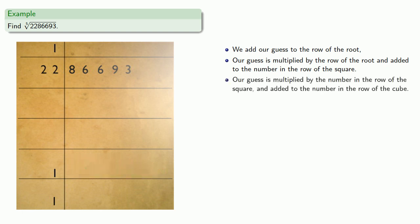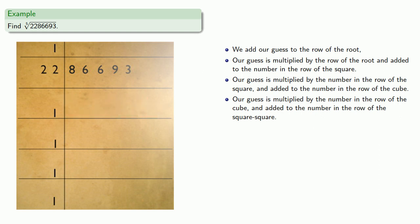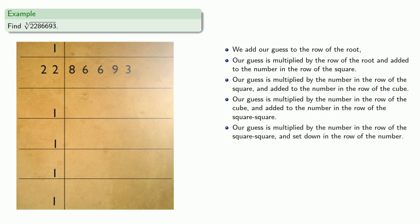Then guess times the number in the row of the square is added to the row of the cube. Then guess times the row of the cube is added to the row of the square square. Now, notice we're at the top of the table, so something a little different happens: we multiply our guess by the number in the row of the square square and set it down in the row of the number, and this time we subtract.